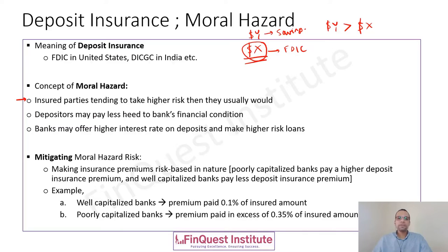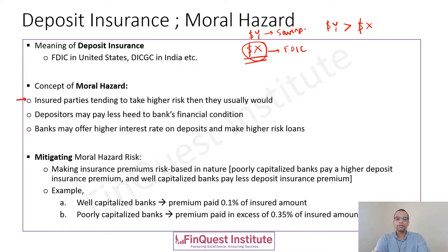From the banking perspective, depositors may pay less attention to the bank's financial condition. It's important for depositors to track how the bank is faring, since their hard-earned money is parked in savings accounts or time deposits. If the bank's condition deteriorates, those funds are at risk. However, because someone like FDIC is there to guarantee a certain quantum of deposits, depositors may not pay the required amount of attention to the bank's financial health — that is another manifestation of moral hazard.